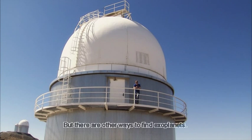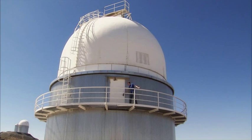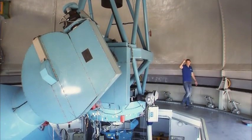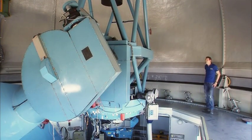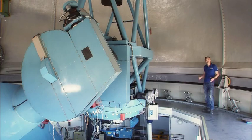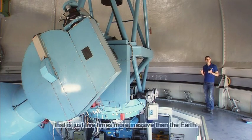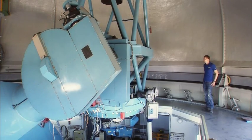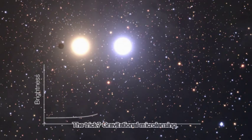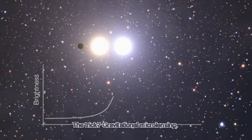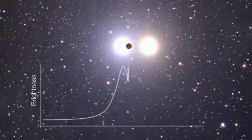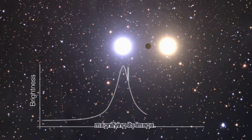But there are other ways to find exoplanets. In 2006, the 1.5-meter Danish telescope helped to discover a distant planet that is just five times more massive than the Earth. The trick? Gravitational microlensing. The planet and its parent star passed in front of a brighter star in the background, magnifying its image.